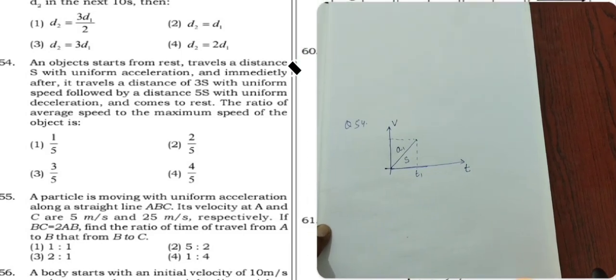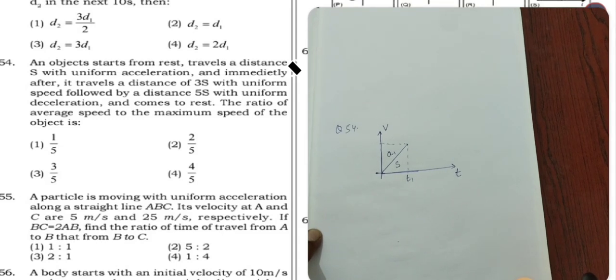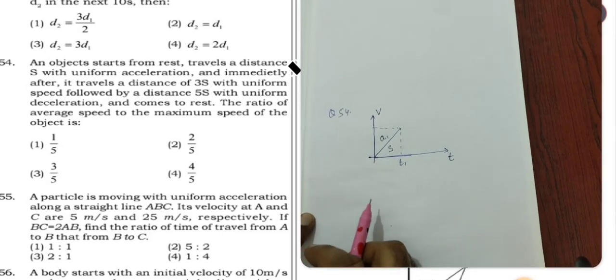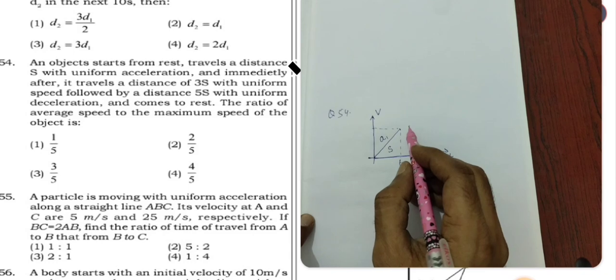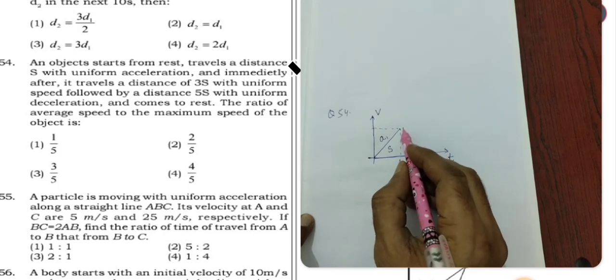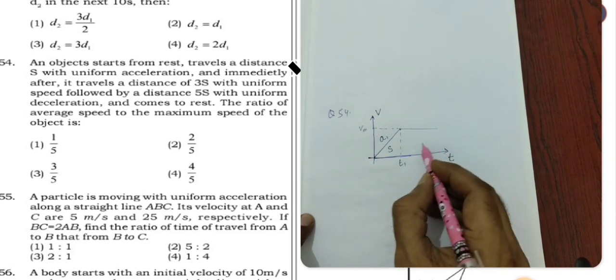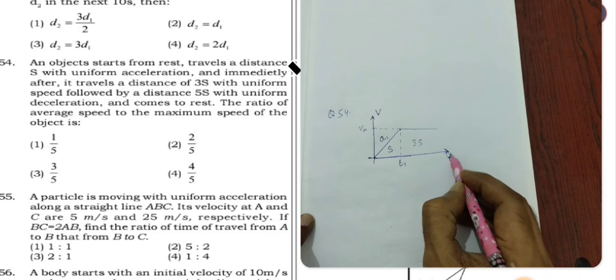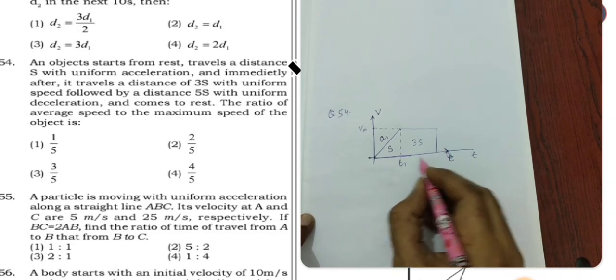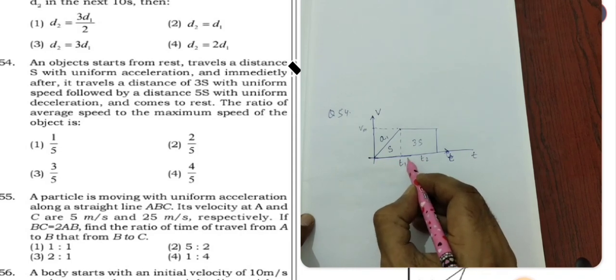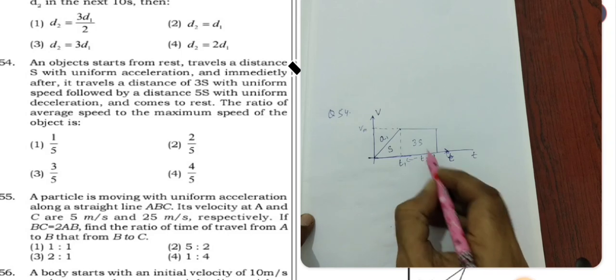And immediately after it, travels a distance 3S with uniform speed. So the velocity reached here, maximum velocity Vm, continues at constant velocity. That means 3S distance is traveled. So here S distance is traveled, and from here to here we assume time T1, and this time we assume T2.